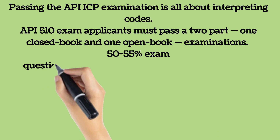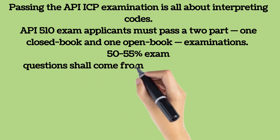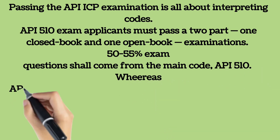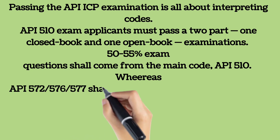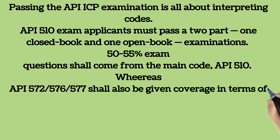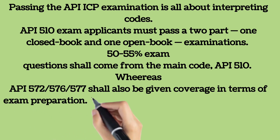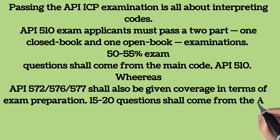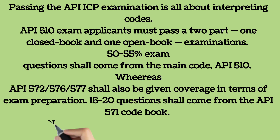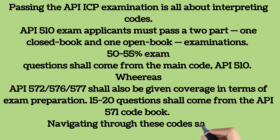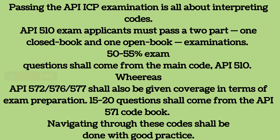To receive the certification, applicants must pass a two-part examination: one closed book and one open book. 50–55% of exam questions shall come from the main code, API 510. API 572, 576, and 577 shall have small coverage in terms of exam questions. Thorough knowledge and concepts of damage mechanisms as mentioned in the body of knowledge of API 510 are equally important in passing the certification exam. 15–20 questions shall come from the API 571 codebook. Navigating through these codes shall be done with good practice.